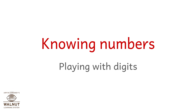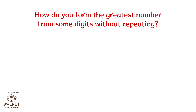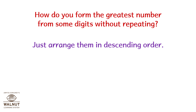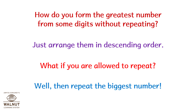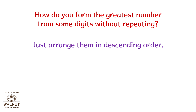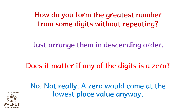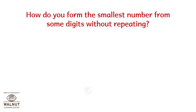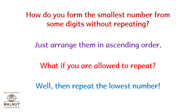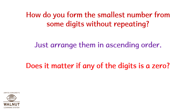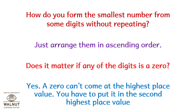Now let's look at knowing numbers — playing with digits. To form the greatest number from given digits without repeating, arrange them in descending order. If repeating is allowed, repeat the biggest digit. To form the smallest number, arrange in ascending order. If repeating is allowed, repeat the lowest digit. Note: if any digit is 0, it cannot go at the highest place value — it goes in the second highest place value.